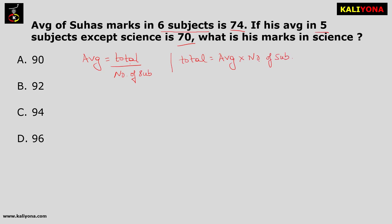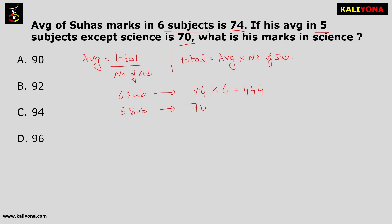Using this formula, we find total marks for 6 subjects: average is 74, so 74 into 6 equals 444. For 5 subjects, the average is 70, so 70 into 5 equals 350.